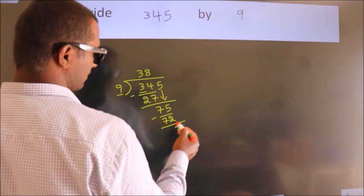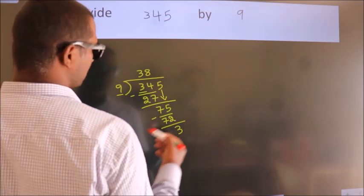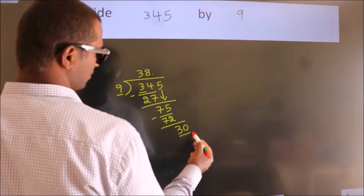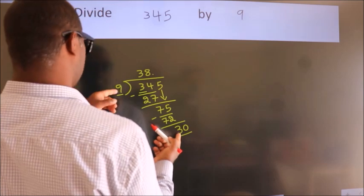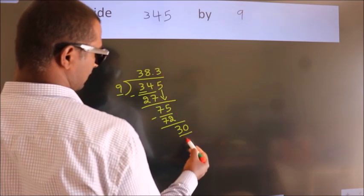After this, no more numbers to bring it down. So what we do is, we put dot, take 0. So, 30. A number close to 30 in 9 table is 9 threes, 27.